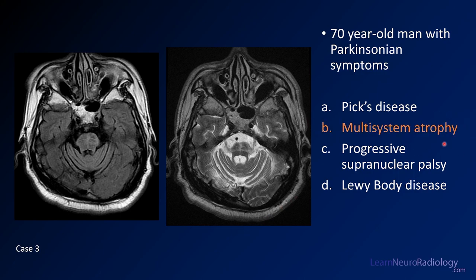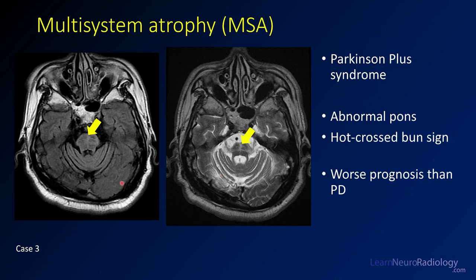The answer in this case is MSA, or multisystem atrophy. The classic finding here is the hot crossed bun sign — abnormal T2 hyperintensity through the pons in the shape of a cross, like the pastry. You also see cerebellar atrophy and atrophy of the cerebellar peduncles. Like PSP, MSA is a Parkinson's plus syndrome with a worse prognosis than Parkinson's disease, more rapidly progressive, and it doesn't respond to conventional treatments.